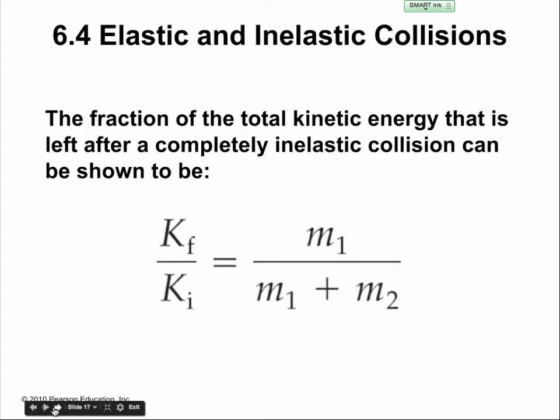The fraction of total kinetic energy remaining after a completely inelastic collision boils down to the masses: the final kinetic energy is proportional to the mass of the first object over the initial kinetic energy that includes the masses of both objects.